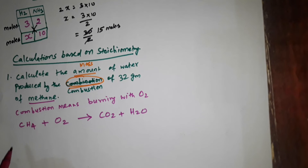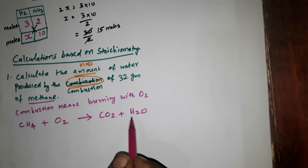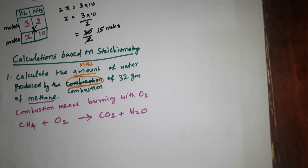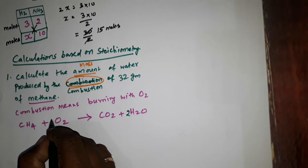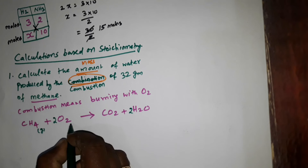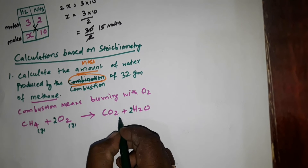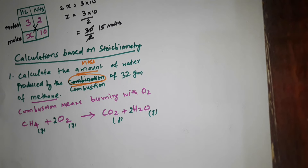If any carbon compound substance is burning with oxygen, we will get carbon dioxide and water. Now, balance the equation. After balancing, you will get 2 moles of water and 2 moles of oxygen. The equation is balanced. All are in gaseous state. As per the stoichiometric equation, this is the stoichiometric equation.